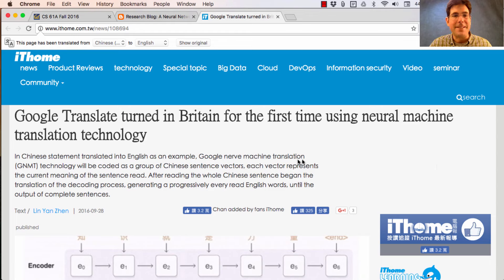In Chinese statement translated into English as an example, Google Nerve machine translation GNMT technology will be coded as a group of Chinese sentence vectors. Each vector represents the current meaning of the sentence read. After reading the whole Chinese sentence, began the translation of the decoding process, generating progressively every read English words until the output of complete sentences.